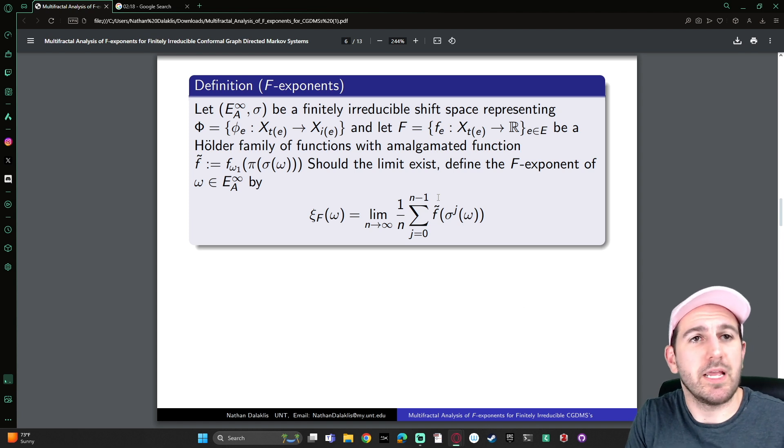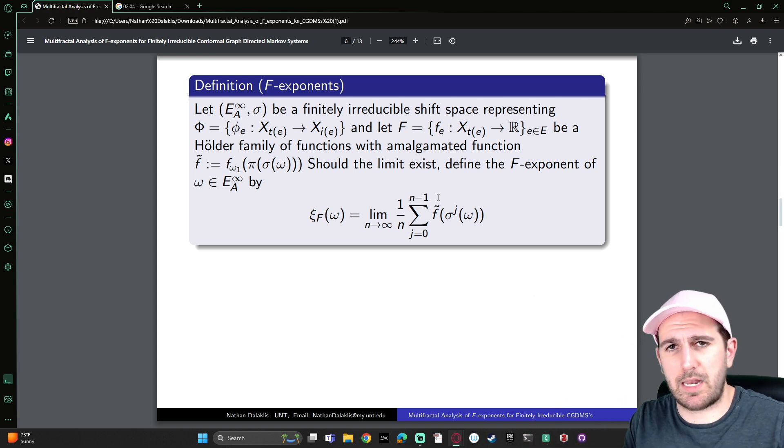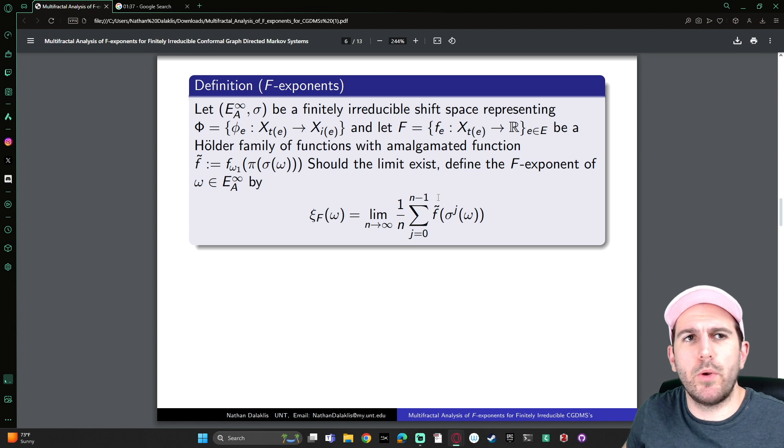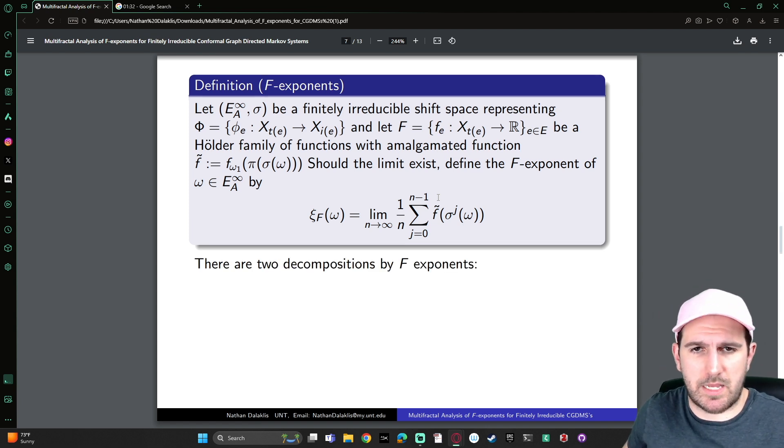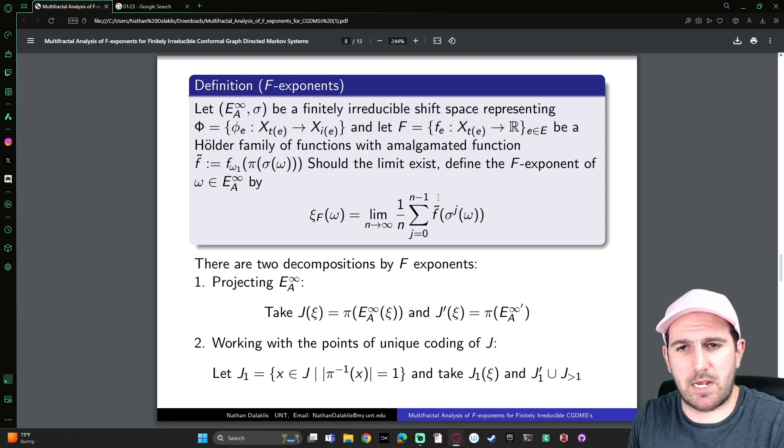If you go ahead and have a symbolic representation of a conformal graph-directed Markov system, and you have some family of Holder functions on that conformal graph-directed Markov system, you can go ahead and amalgamate them together into a potential on the symbolic representation. And then you can look at a particular symbolic point, and average over its orbit of the evaluation of the amalgamated function, and that spits out what we call the F exponent of that particular symbolic point. And the thing to notice here is that there's a problem, is that we have a coding issue, is that our coding map might not be one-to-one and onto, so there are two decompositions of our limit set by F exponents here. There's the one where you decompose the symbolic space according to the F exponent of each symbolic point, and then project it down onto the limit set. Or, you could find these F exponents on the limit set, but you just remove points of non-unique coding from the limit set.